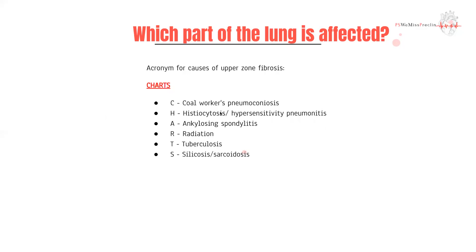We also have an acronym for the causes that affect the upper zones: CHARGE. C for coal workers' pneumoconiosis, H for hypersensitivity pneumonitis, A for ankylosing spondylitis, R for radiation pneumonitis, G is implied, T for TB, S for silicosis and sarcoidosis.